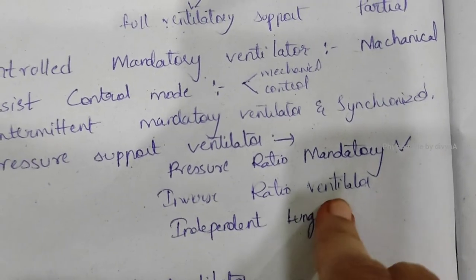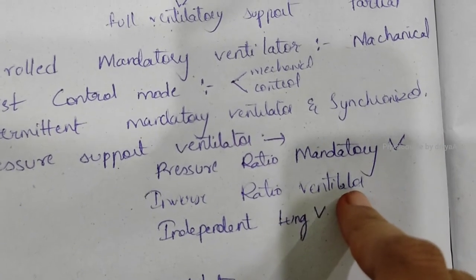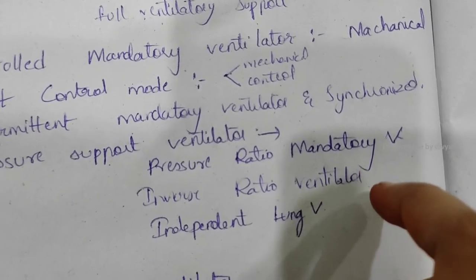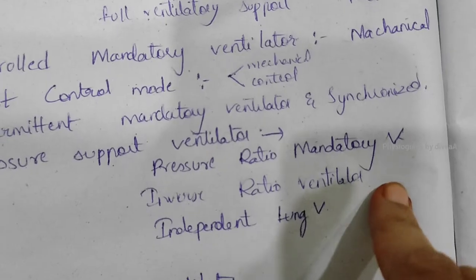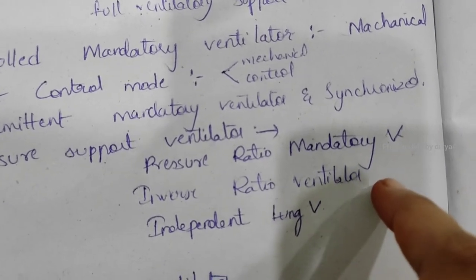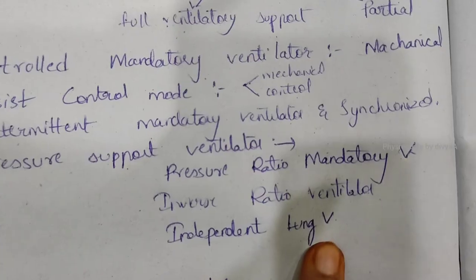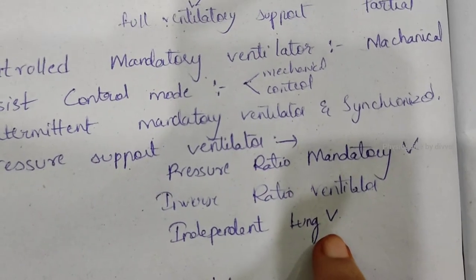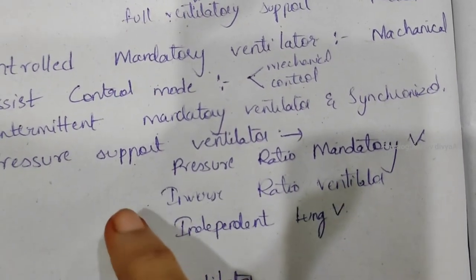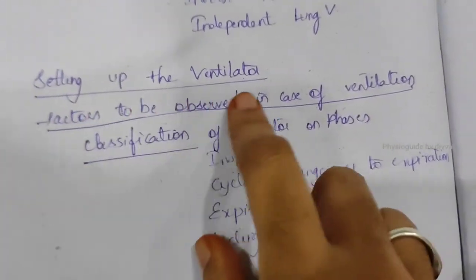Inverse ratio ventilation: the normal inspiration-to-expiration ratio is 1:1.5 to 1:2, but here inspiration time is increased. This is useful in acute respiratory distress syndrome (ARDS). Independent lung ventilation uses bifid endotracheal tubes when one lung is more affected than the other.